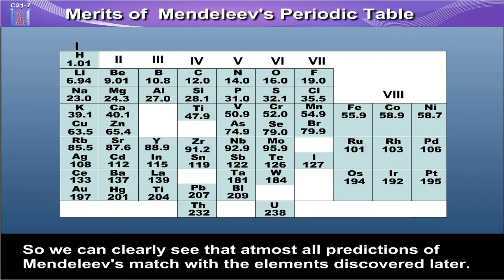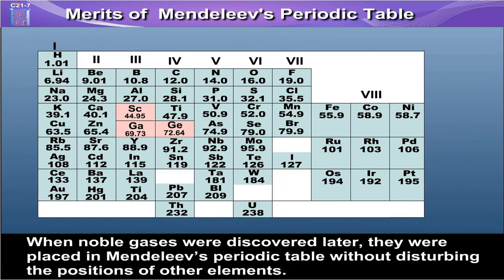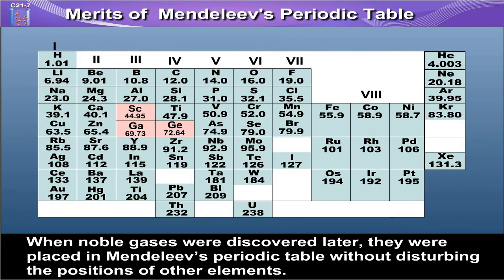We can clearly see that almost all the predictions of Mendeleev clearly match with the element discovered later. When noble gases were discovered later, they were placed in Mendeleev's periodic table without disturbing the positions of other elements.